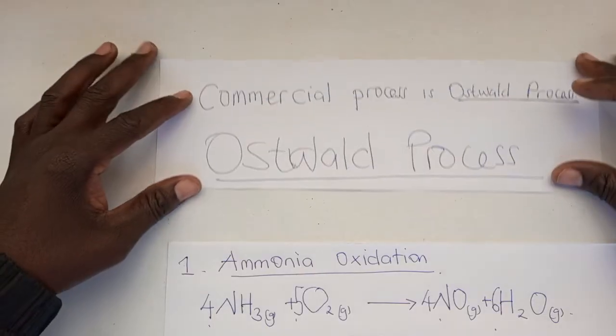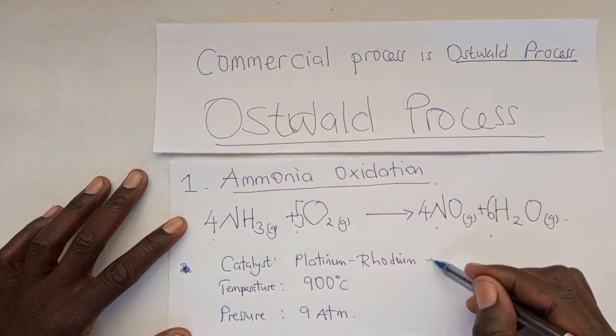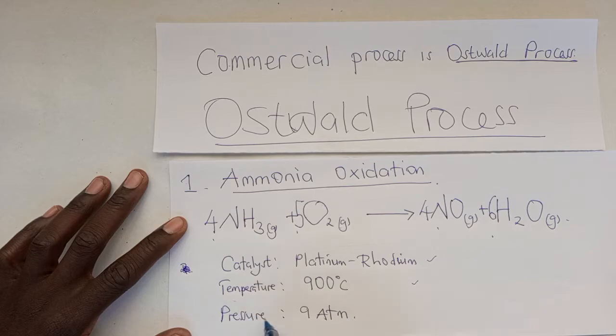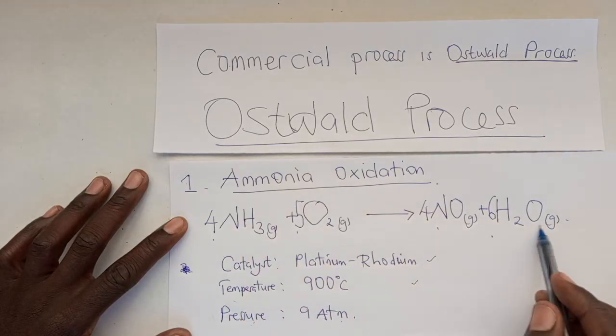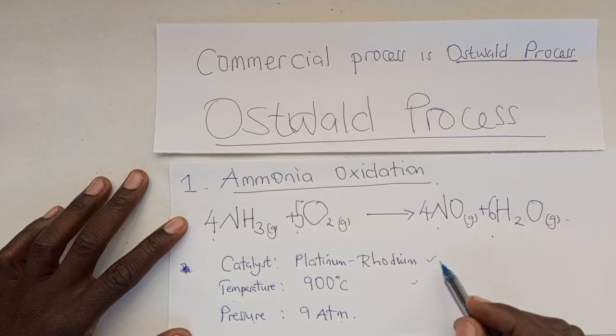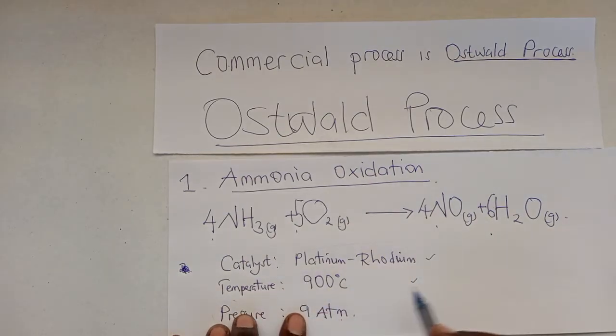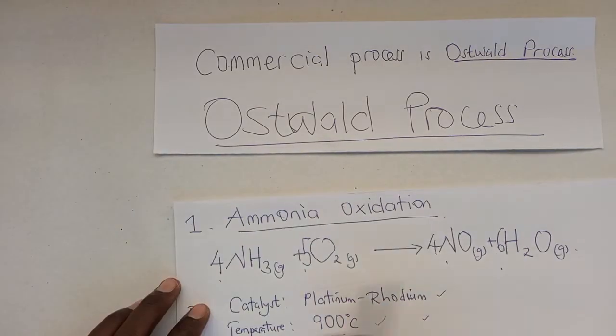In this reaction, there are two conditions that should be met: catalyst and temperature. The pressure is done before this process takes place during compression. The catalyst is an alloy of platinum-rhodium, and the temperature ranges from 700 to 900°C, but pick 900°C as your answer. This is the first step, ammonia oxidation.